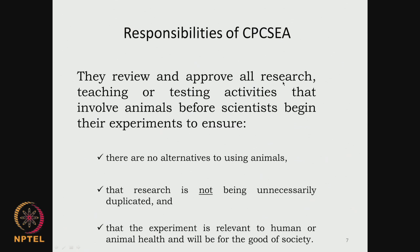The CPCSEA reviews and approves all research, teaching or testing activities that make use of animals - small animals, large animals and so on. They look at whether there are no alternatives to using animals and whether the research is not duplicated. If the data is already available, they might not approve it. They also look at whether these experiments are relevant to human or animal health, and whether you need to test it out a priori before being actually tested on humans or animals.